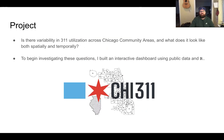For my project, I want to know: is there variability in 3-1-1 utilization across Chicago community areas, and what does it look like, both spatially and temporally? To begin investigating these questions, I built an interactive dashboard using public data in R, and I'll talk about the process for building that dashboard today.